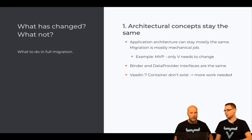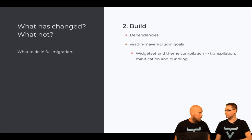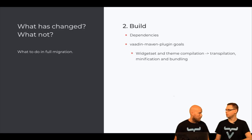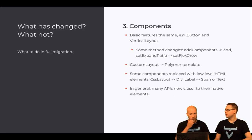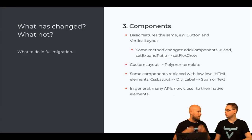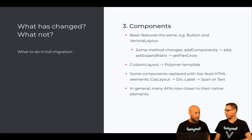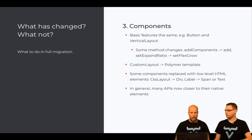If you used Vaadin 7 with Container, you'll have more work restructuring data handling. Otherwise it's mostly just about the components. Big changes are in the build script — completely different dependencies, and the Maven plugin has the same name but different goals. The best approach is to take an example project from vaadin.com/start. In layouts, setExpandRatio is now setFlexGrow — only the names changed.